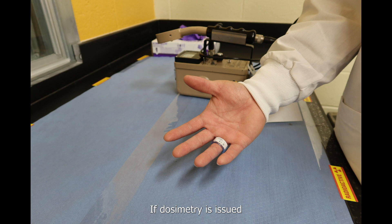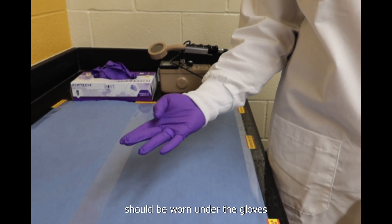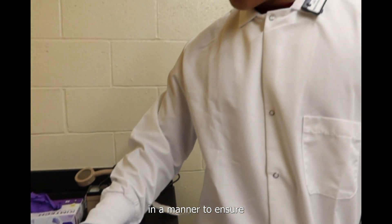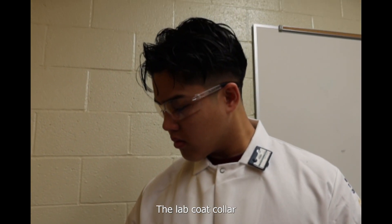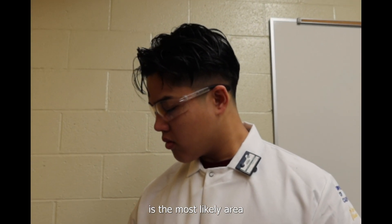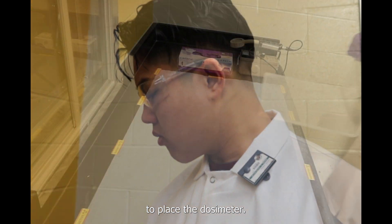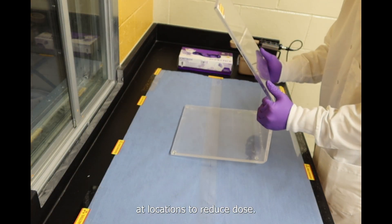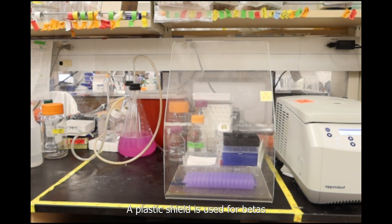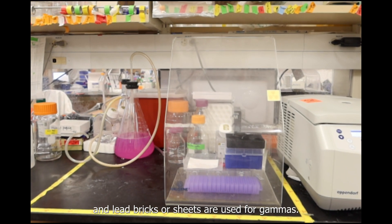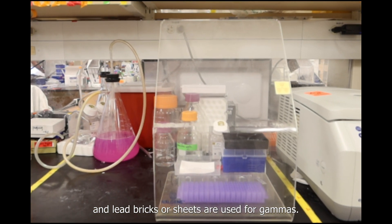If dosimetry is issued, extremity dosimetry should be worn under the gloves in a manner to ensure the highest dose is collected. The lab coat collar is the most likely area to place the dosimeter. Ensure shielding is in place at locations to reduce dose. A plastic shield is used for betas and lead bricks or sheets are used for gammas.